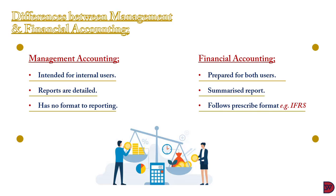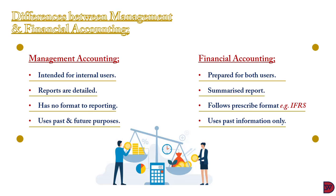Financial accounting, however, must strictly follow prescribed principles propounded by governing bodies. For example, reports by financial accountants must either follow the IFRS — the International Financial Reporting Standard — or the United States Generally Accepted Accounting Principle, that is the GAAP. So financial accounting reports are uniform across entities. Lastly, management accounting guides information for forecasting, that is for future purposes, whilst financial accounting does so only to analyze past periods.